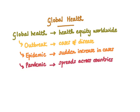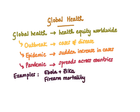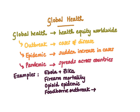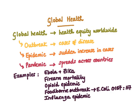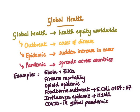We'll go through some examples of epidemics. Ebola and Zika virus are something public health professionals were called upon to investigate not long ago. Firearm mortality is a leading cause of death, as well as the opioid epidemic in the United States. Foodborne outbreaks include the 2006 outbreak of E. coli in the United States, which was linked to fresh spinach. The influenza epidemic — the H1N1 flu — came to the attention of the CDC in 2009. And lastly, there is the COVID-19 pandemic, which is covered in greater detail in a companion video.